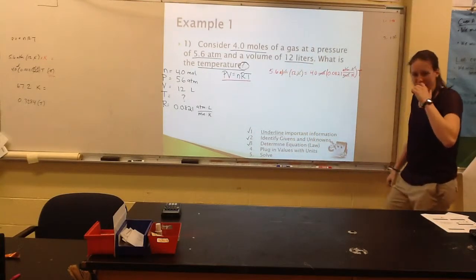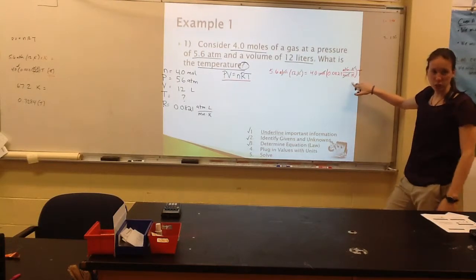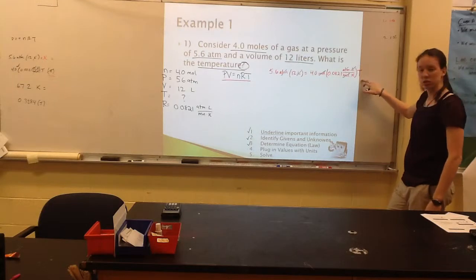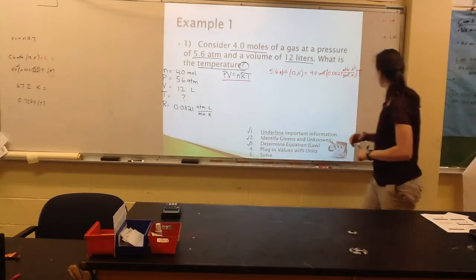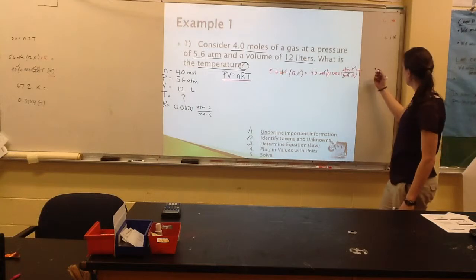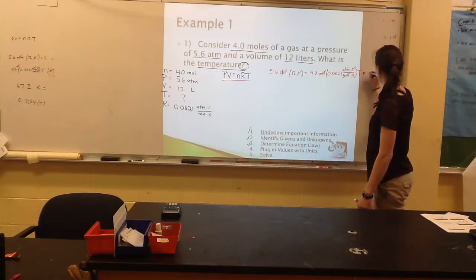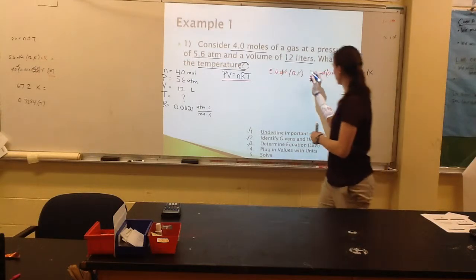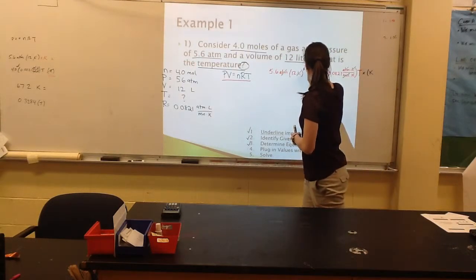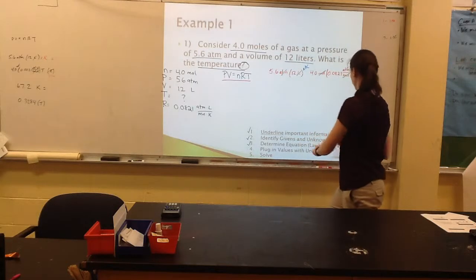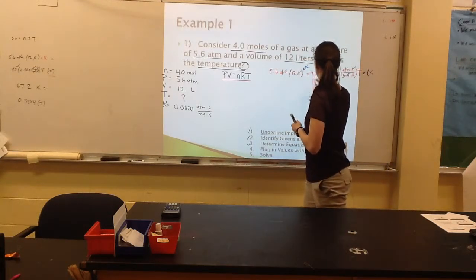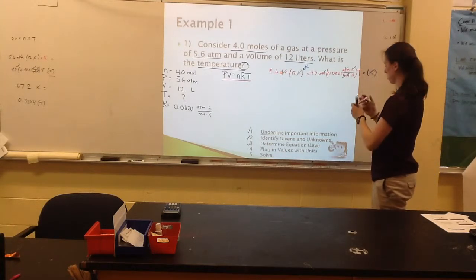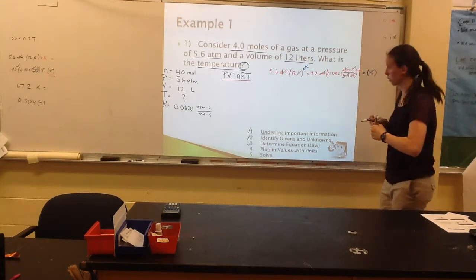Right now, I've got Kelvin as a unit in the denominator of a fraction. We know we need temperature in units of Kelvin. So what I can do is multiply both sides by units of Kelvin, which will allow me to cancel out Kelvin here, and end up with temperature in Kelvin as I would love.